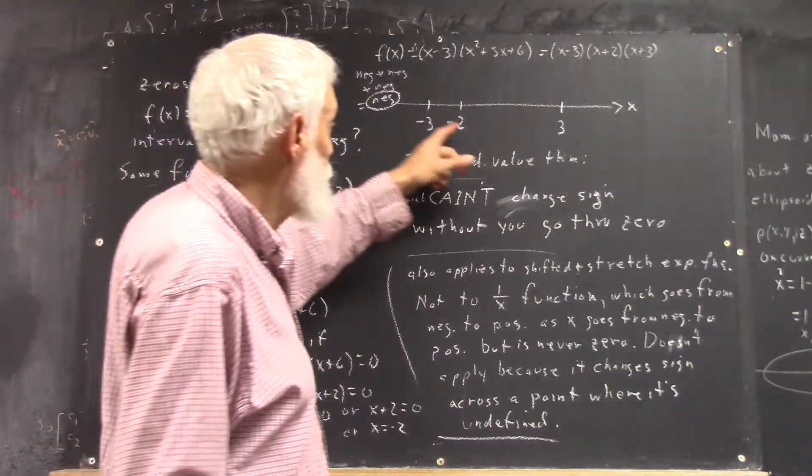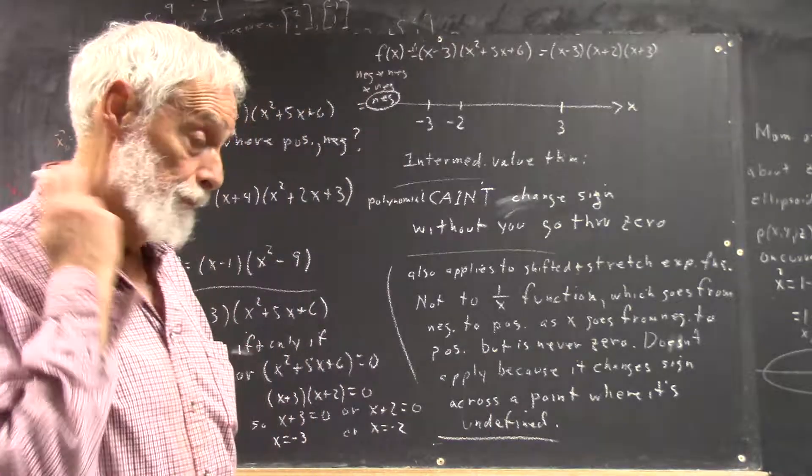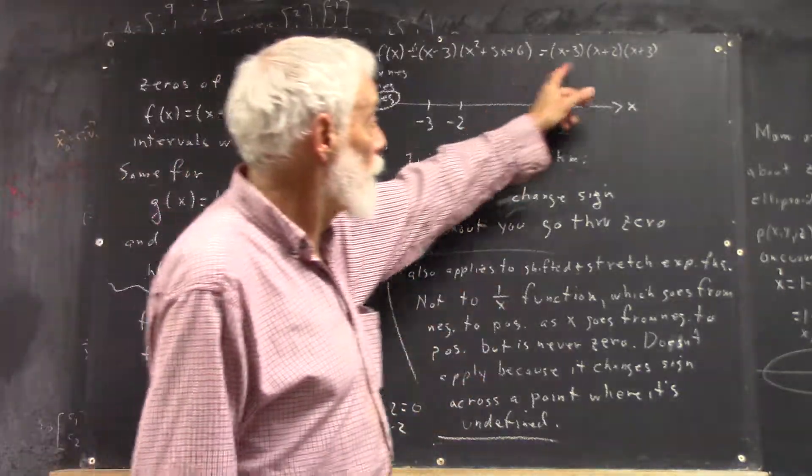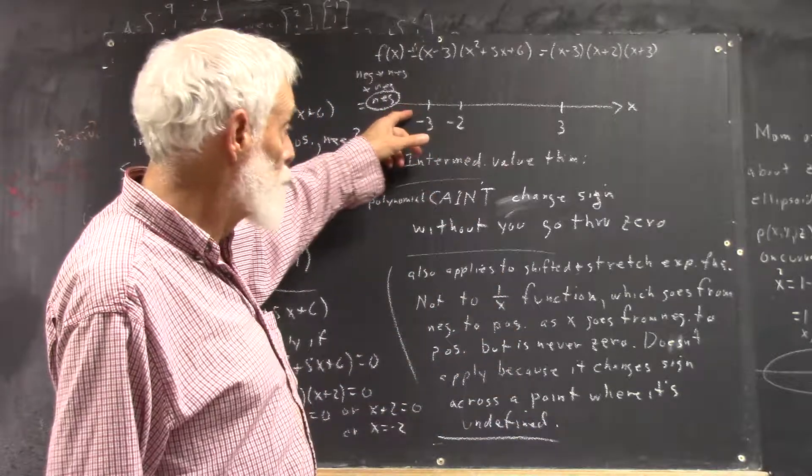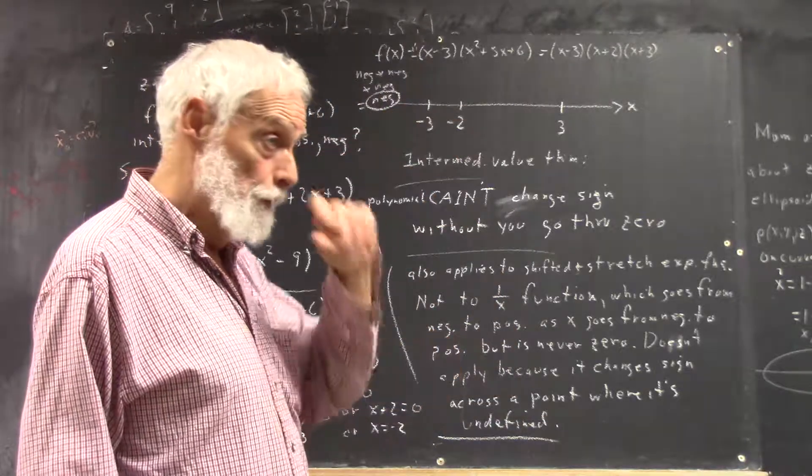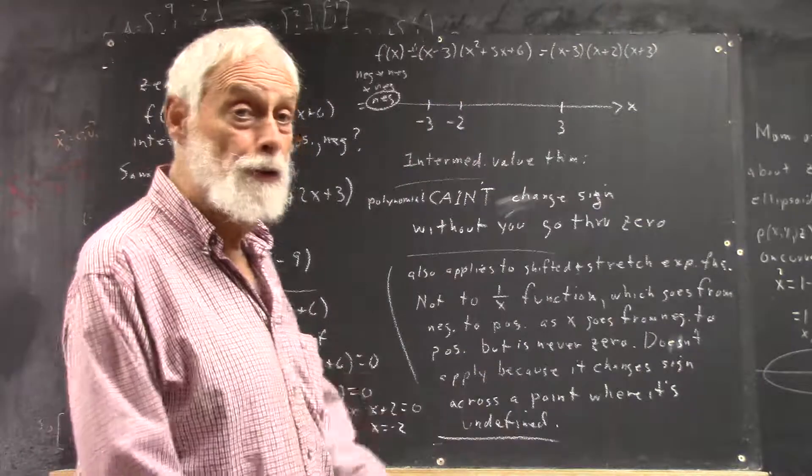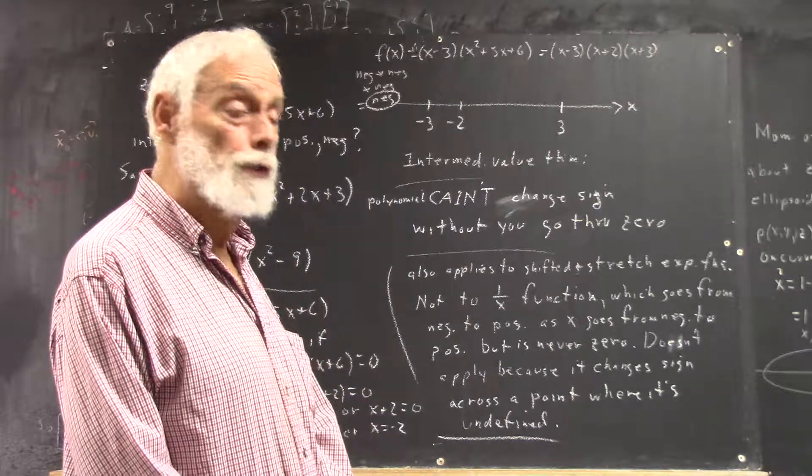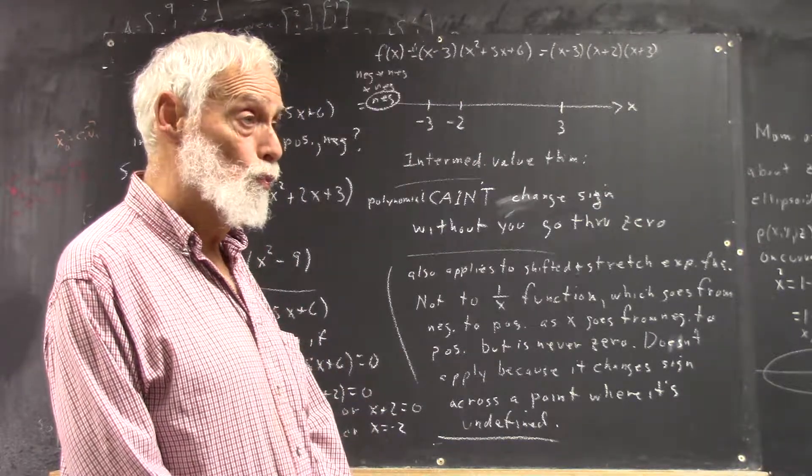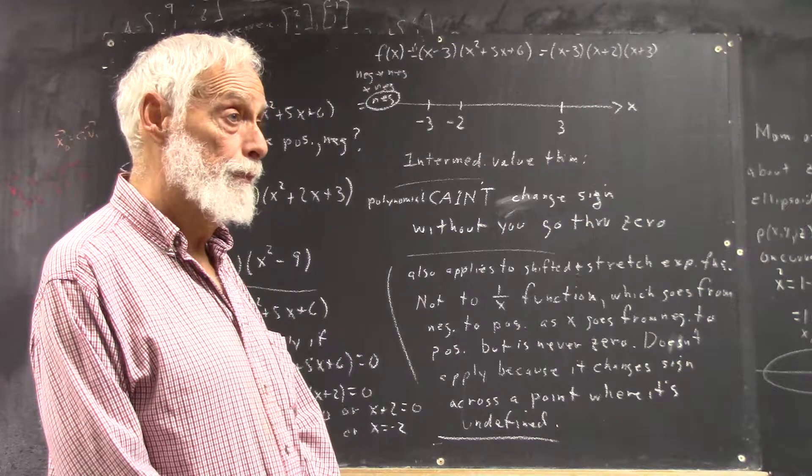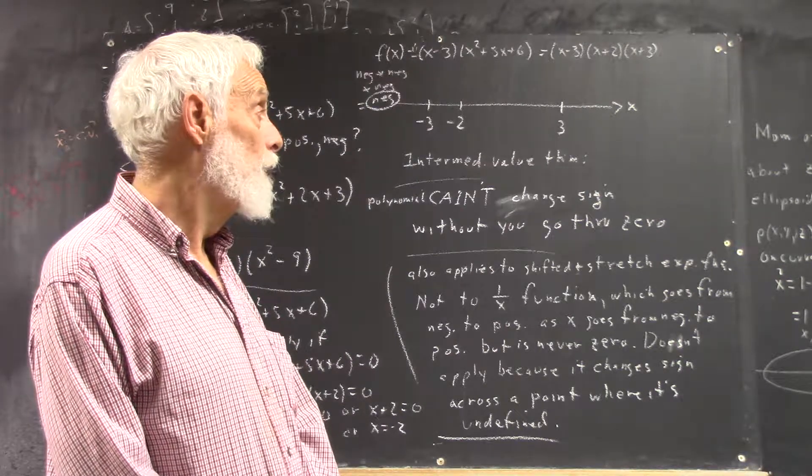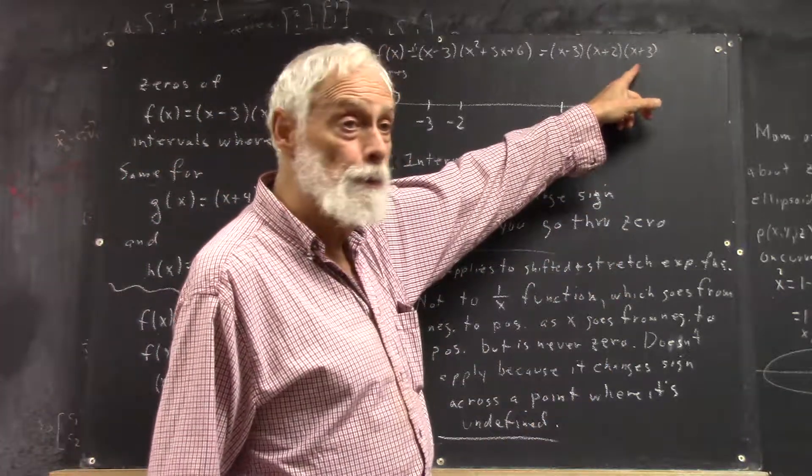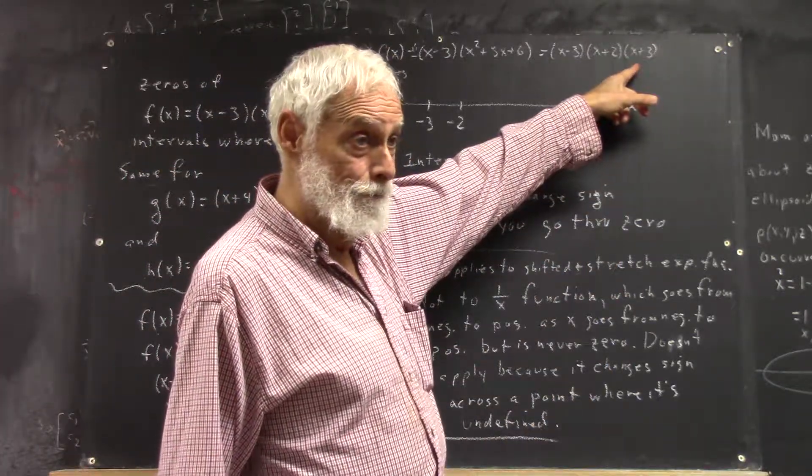Now, between negative 3 and negative 2, at least one of these factors changes sign when x goes from less than negative 3 to more than negative 3. Which one changes sign? Or is it more than one? Well, it turns out that x plus 3 changes sign.